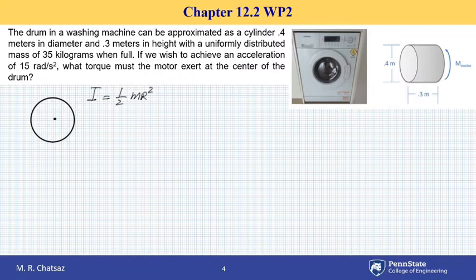So if I consider a free body diagram of this object, the only torque exerted on it is due to the motor, so let's call that m equals I alpha.